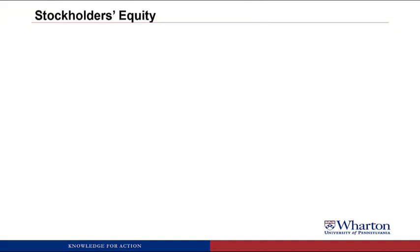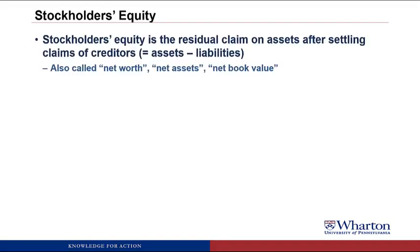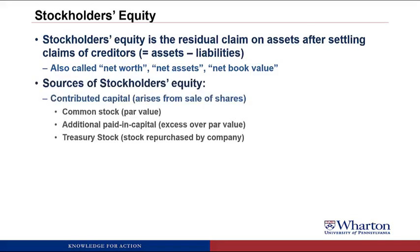Finally, we have stockholders' equity — the residual claim on assets after settling claims of creditors, in other words assets minus liabilities. Synonyms include shareholders' equity, owners' equity, net worth, net assets, and net book value. Unlike assets or liabilities, there are no separate criteria for measuring stockholders' equity because if you measure assets and liabilities correctly, equity is whatever is left over. There are two sources: contributed capital, which arises from selling shares of stock to the public — recorded as common stock at par value and additional paid-in capital above par — and treasury stock when the company repurchases its own shares.